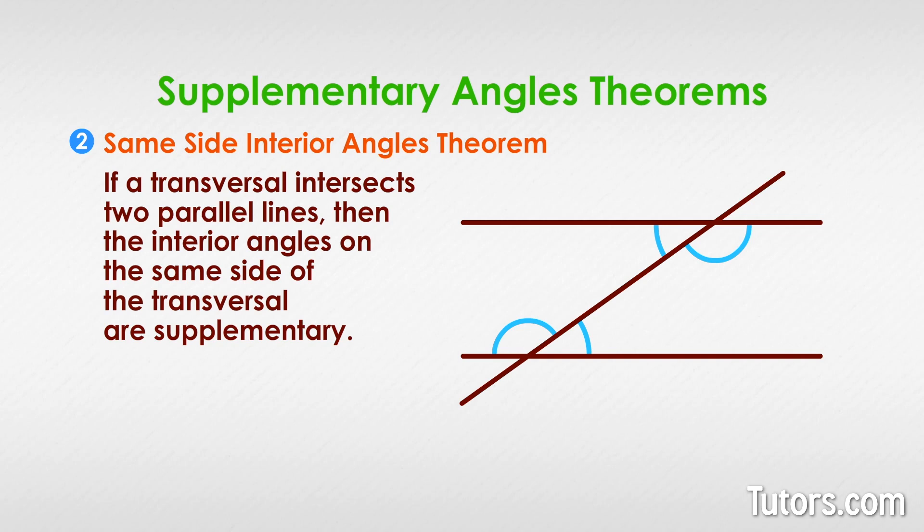The Converse Theorem tells us that if a transversal intersects two lines and the interior angles on the same side of the transversal are supplementary, then the lines are parallel. This is an especially useful theorem for proving lines are parallel.